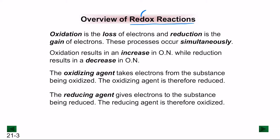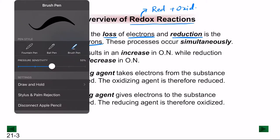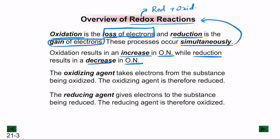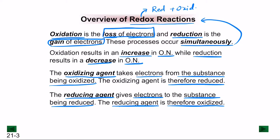Redox reactions combine two reactions: oxidation and reduction. Oxidation is the loss of electrons and results in an increase in oxidation number, while reduction is the gain of electrons and results in a decrease in oxidation number. These processes occur simultaneously. The oxidizing agent takes electrons from the substance being oxidized and is itself being reduced. The reducing agent gives electrons to the substance being reduced and is itself being oxidized.